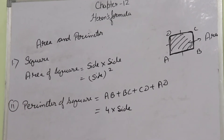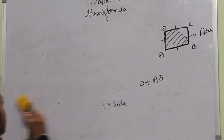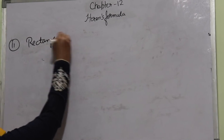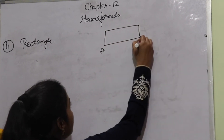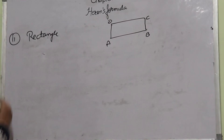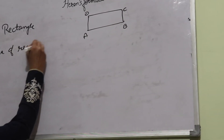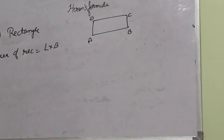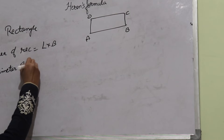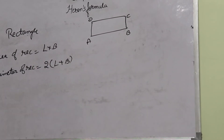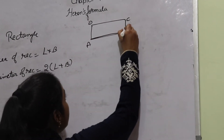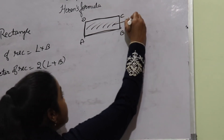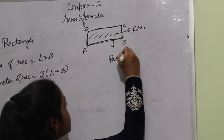Now we come to another figure, that is rectangle. This is rectangle ABCD. Area of rectangle is L into B. And what is the perimeter? The perimeter is the sum of all the sides of the rectangle, and the perimeter of rectangle is 2 times (L plus B). The area inside the rectangle is the area, and the boundary around it is the perimeter.